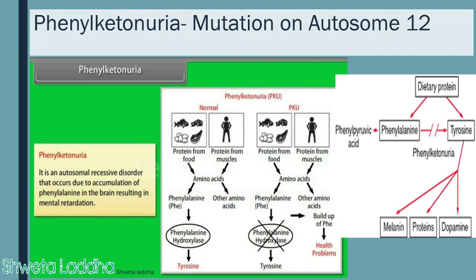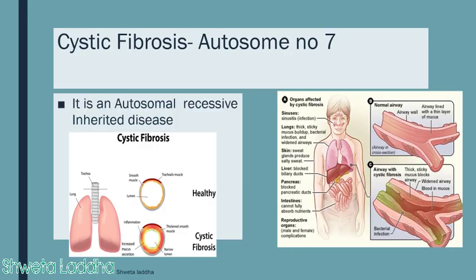Cystic fibrosis is another autosomal recessive disease caused by mutational changes in a gene on chromosome number 7. In a normal person, the bronchi or trachea has a wide lumen lined with smooth muscle. However, in a person with cystic fibrosis, excessive deposition of mucus occurs in the lumen, making it narrower. This mutation on autosome number 7 causes thick, sticky mucus buildup throughout the body.